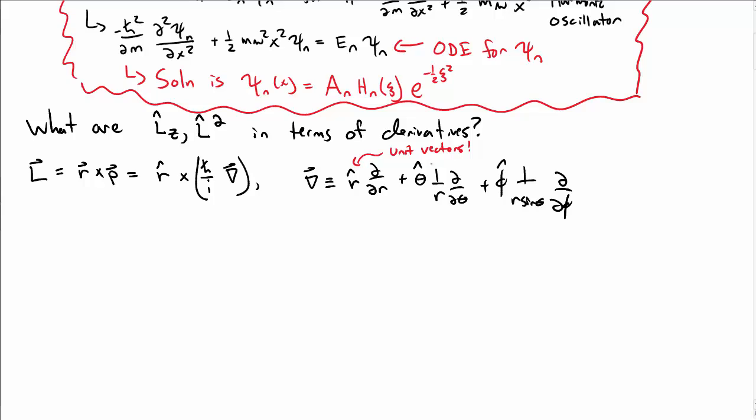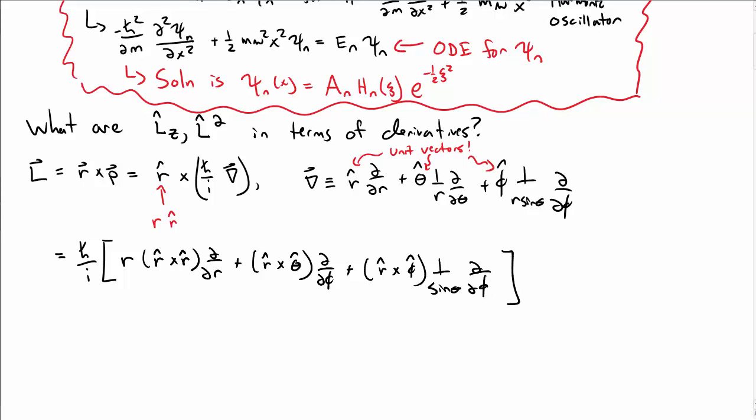Okay, remember whenever we're writing hats in this context right now, these were all for unit vectors, not operators. So don't get yourself confused on what's a unit vector and what's an operator. Recall that r vector is r times r hat. And so the angular momentum operator should look like, well just expanding this out, I get r times r cross r hat cross r hat, and I get an r hat cross theta hat term, and I get an r hat cross phi hat term, and I've already canceled some r's in this.